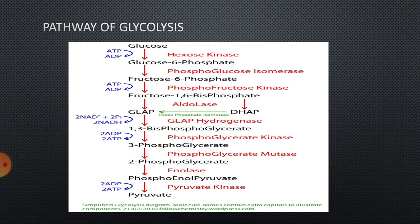For better comprehension, glycolysis must be classified into 3 different parts, so that we can easily understand it, remember it, and rewrite the same at the time of examinations without any fear. First of all, in the first part, we have to learn the 10 different reactions.